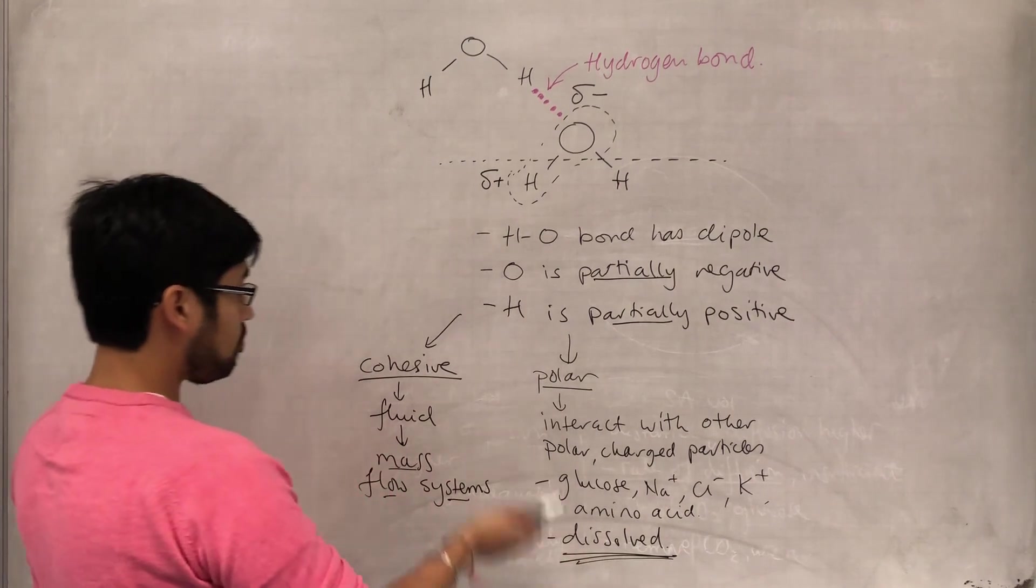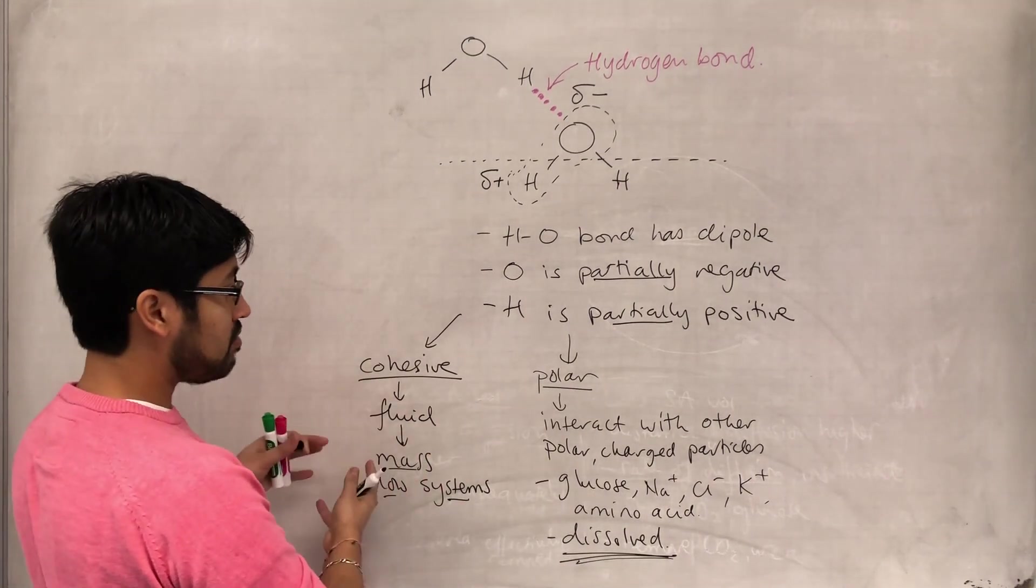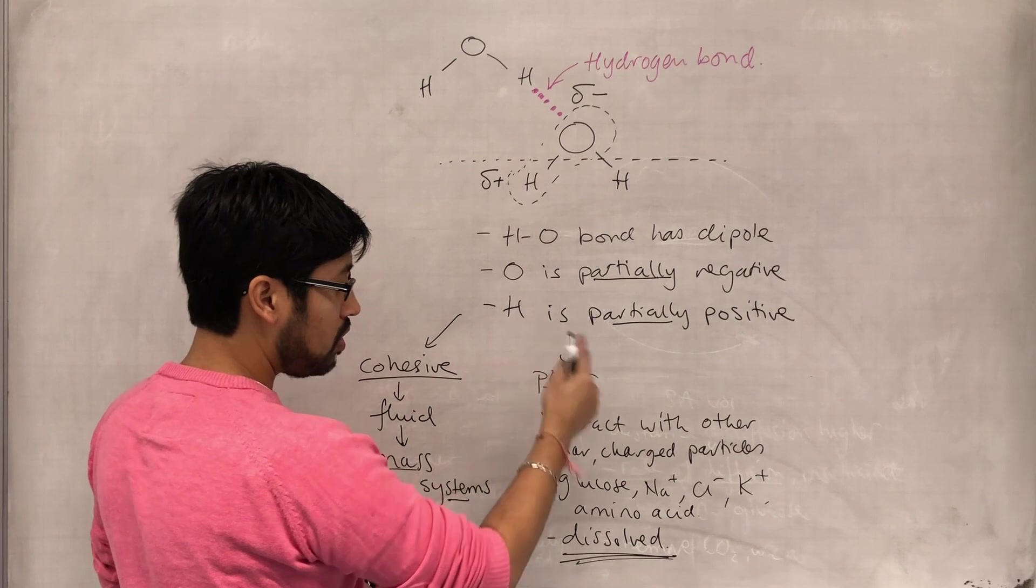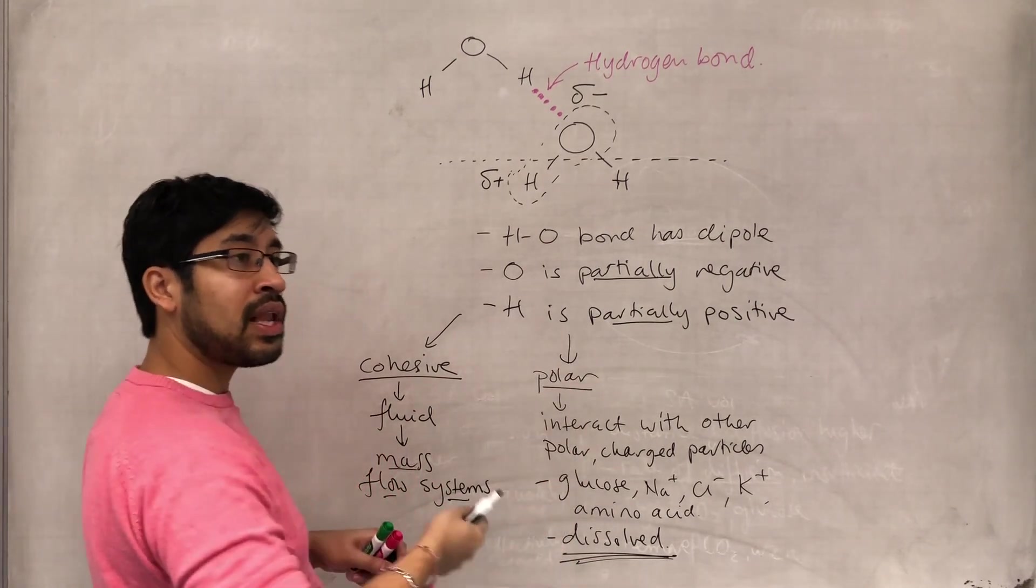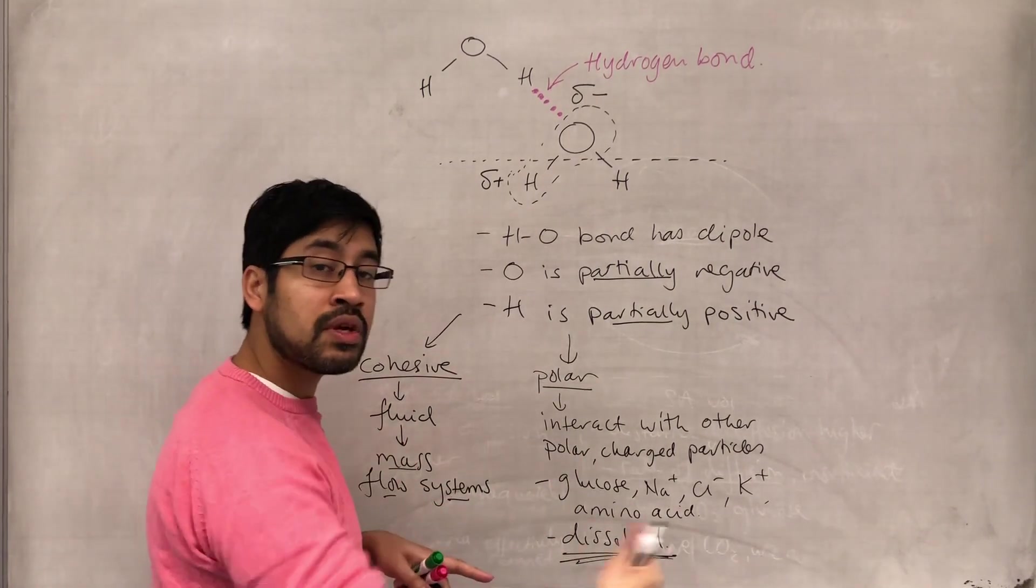So mass flow allows water to move. Being polar and therefore being able to dissolve things allows it to move and take other things with it.